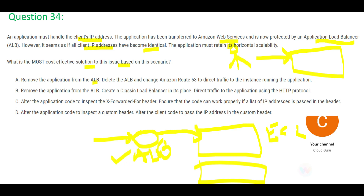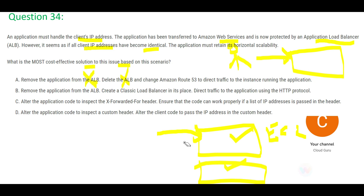The application is usually on multiple EC2 instances, which is why load balancing exists. ALB is like your team lead: it decides which EC2 instance — which developer — is less occupied and should receive the request. Option A says remove the team lead entirely, or remove the application from ALB, then route all traffic to a single instance. That means only one developer gets all the work, which is dangerous. And the question says the application must retain horizontal scalability.